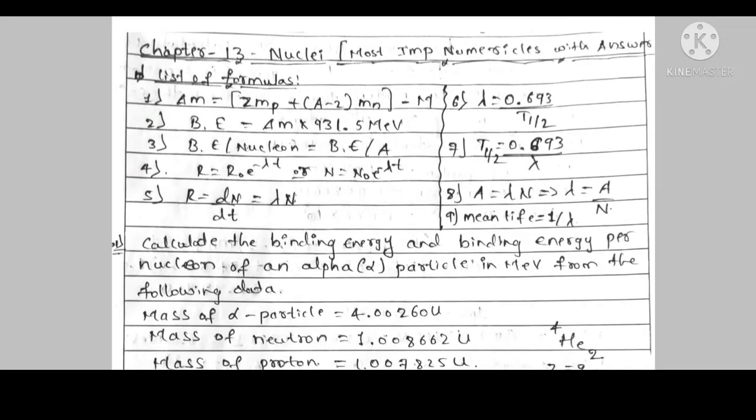In this chapter's numericals: one from electric charges and fields, question 44; question 45, electric potential and capacitance; 46th problem, current electricity; 47th problem, moving charges and magnetism; 48th problem, optics; 49th problem, wave optics; question number 50, a numerical from nuclear chapter. So today we are going to discuss the most important numericals based on nuclei chapter.